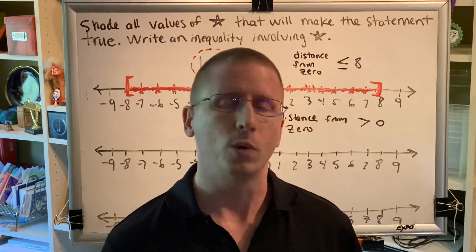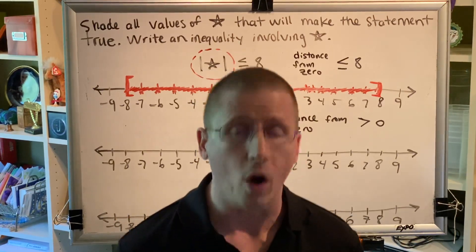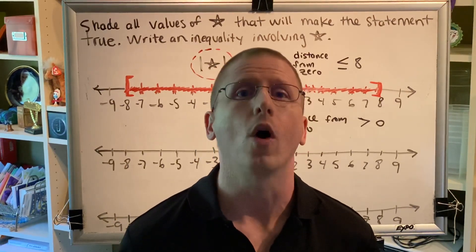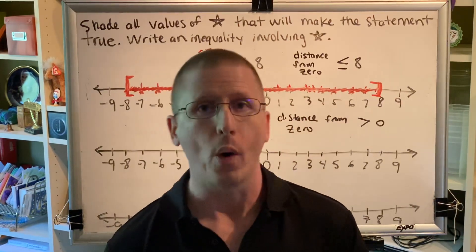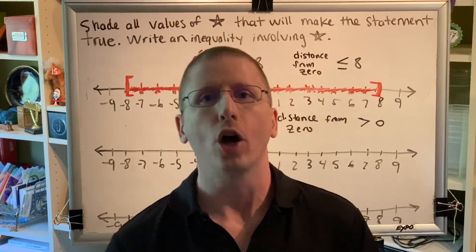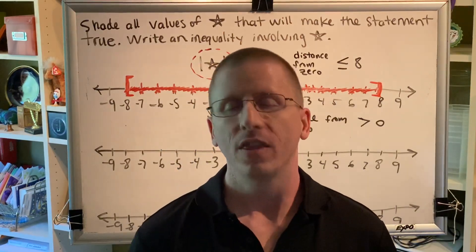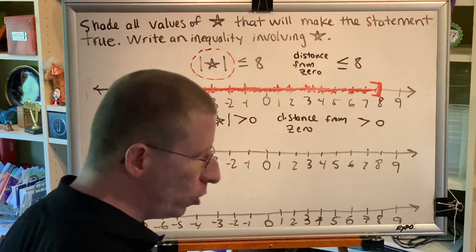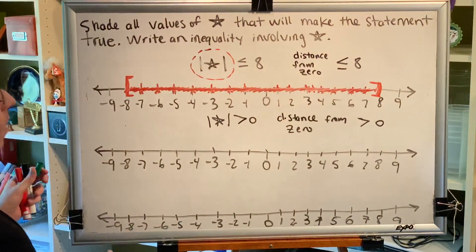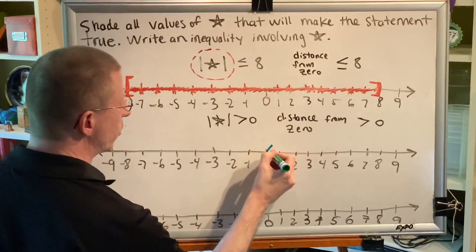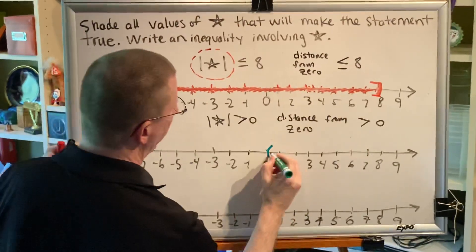Similarly, we would have to include 0.1 and 0.01 and 0.0001. We could even go the other way, negative 0.5, negative 0.1, negative 0.01, negative 0.0001. The lesson here is the moment you take even the tiniest, tiniest step left or right of 0, your distance from 0 will be more than 0.